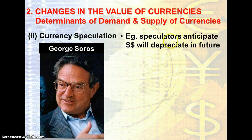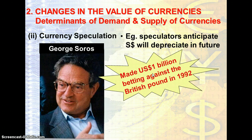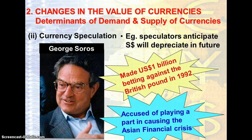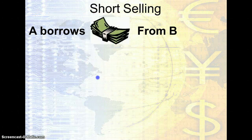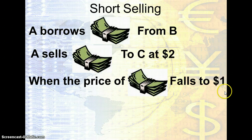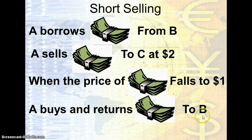George Soros was the man who in 1992 made US $1 billion by betting against the British pound. He anticipated that the British pound would depreciate, so he sold off the British pound and later purchased it back at a lower price level. He was accused of playing a part in the Asian financial crisis, but it was only an accusation. In short selling: A borrows money from B, sells it to C at $2, and when the money falls to $1, A buys and returns it to B, earning the $1 difference. This is known as short selling — a kind of speculative action.